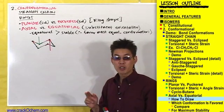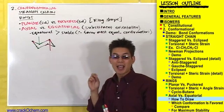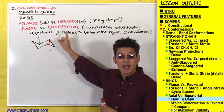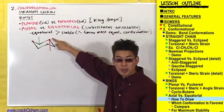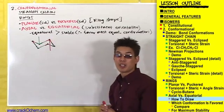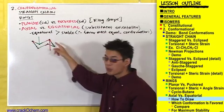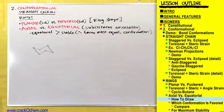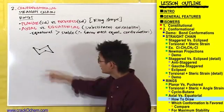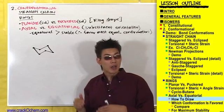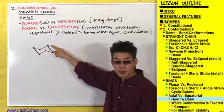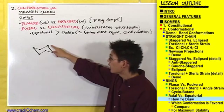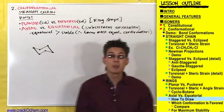Let's see what all this up and down stuff means in terms of drawing axial substituents on this ring. Whichever way the chair is pointing on a particular carbon, that's the way an axial substituent will point. Let's take this carbon — it was pointing up, so if I were to draw an axial substituent coming off of this carbon, I would draw it pointing straight up.